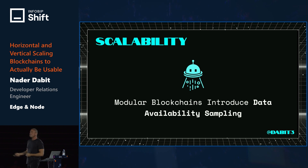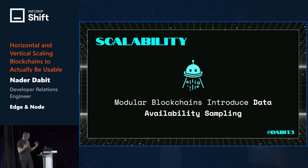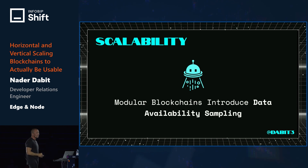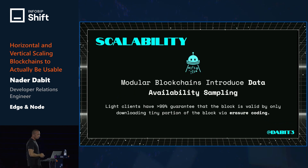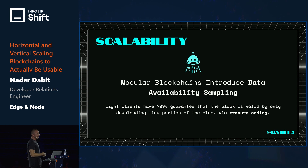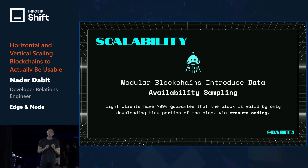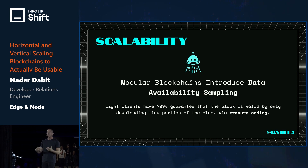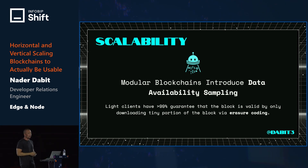New blockchains like Celestia, Polygon Avail, and even the future Ethereum roadmap are implementing a new mechanism called data availability sampling. Data availability sampling is a technique that allows light clients to have almost the exact same security guarantees as a full node, meaning anyone running a light client now gives the network additional security essentially mimicking what a full node would in the past.